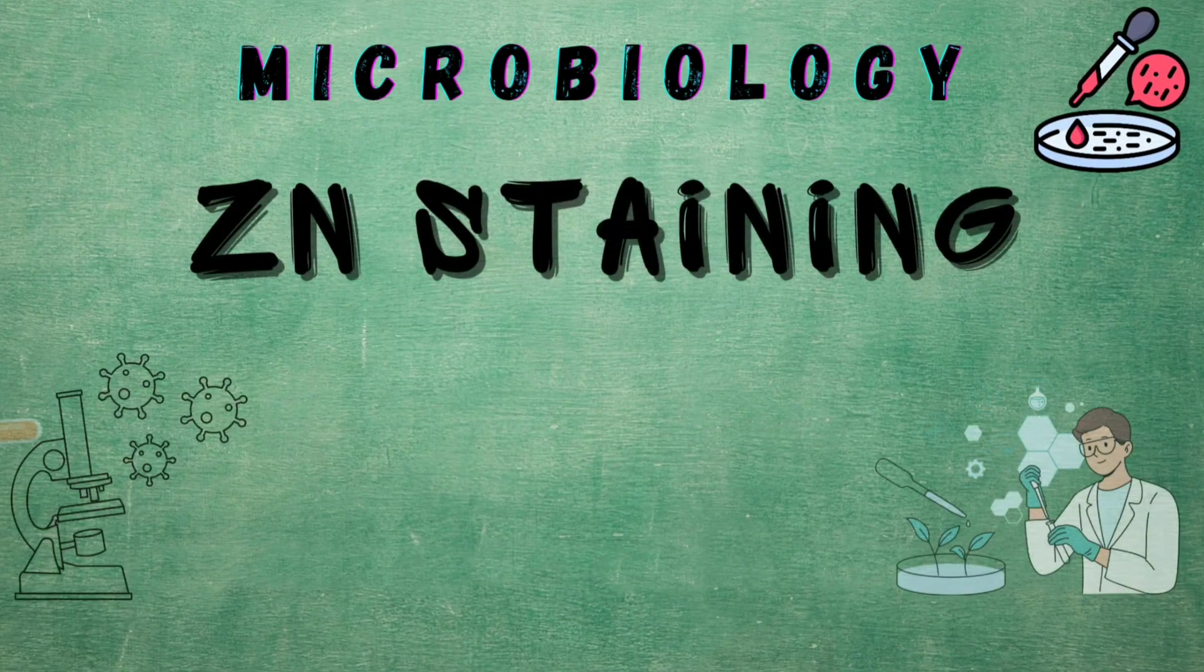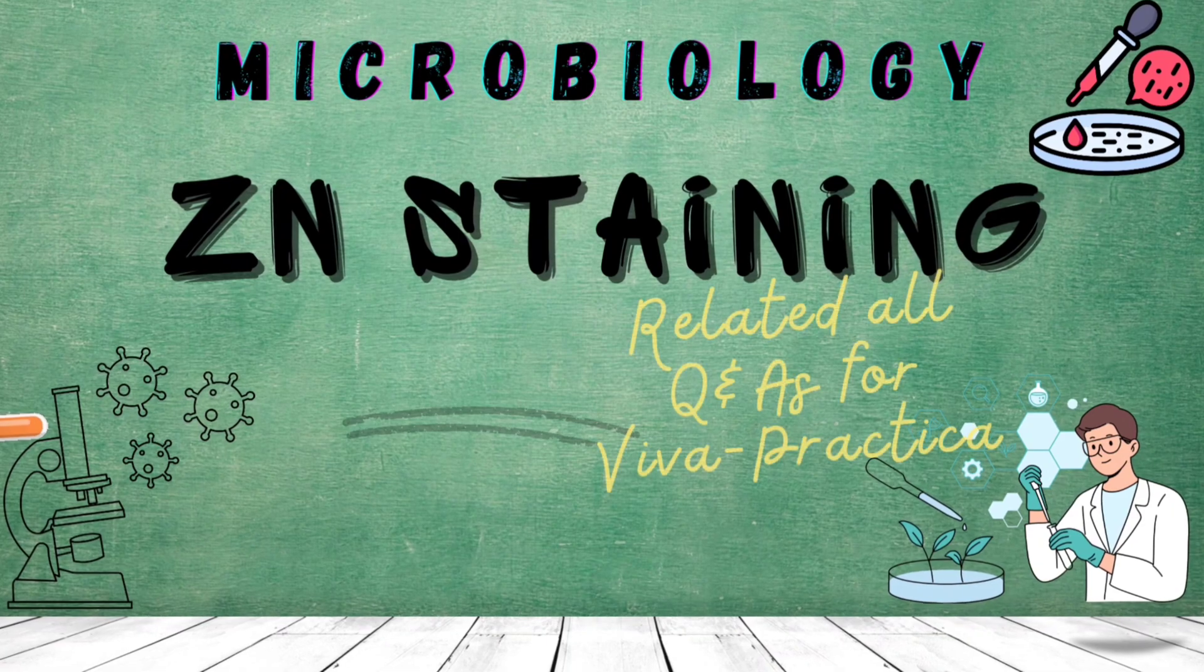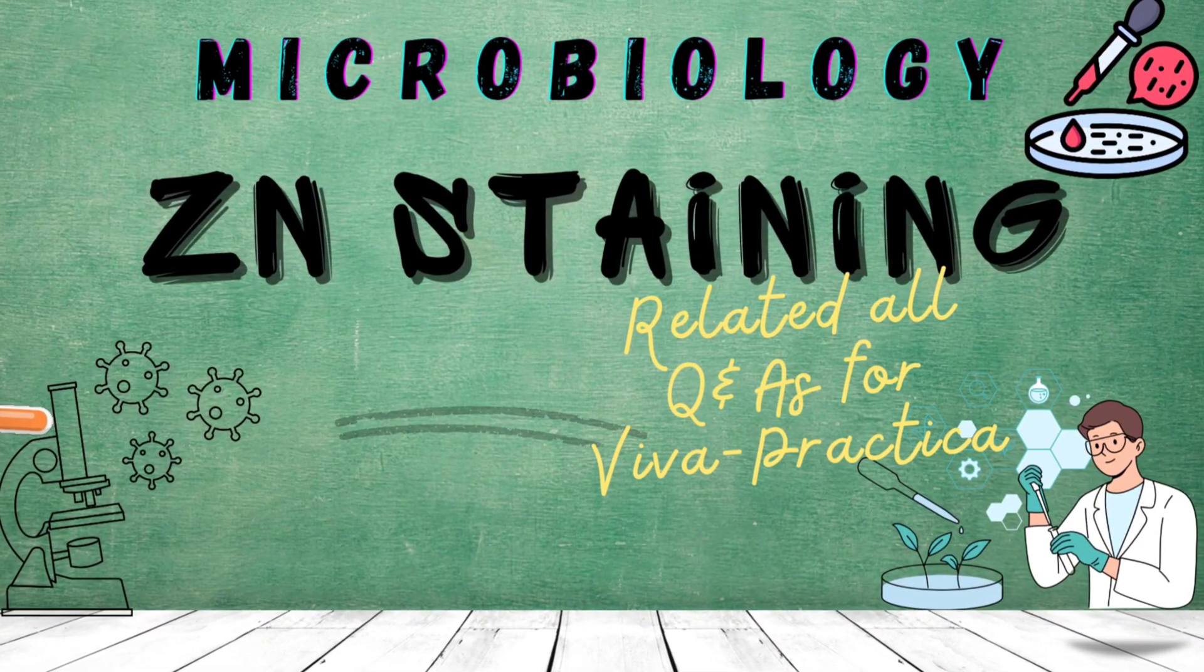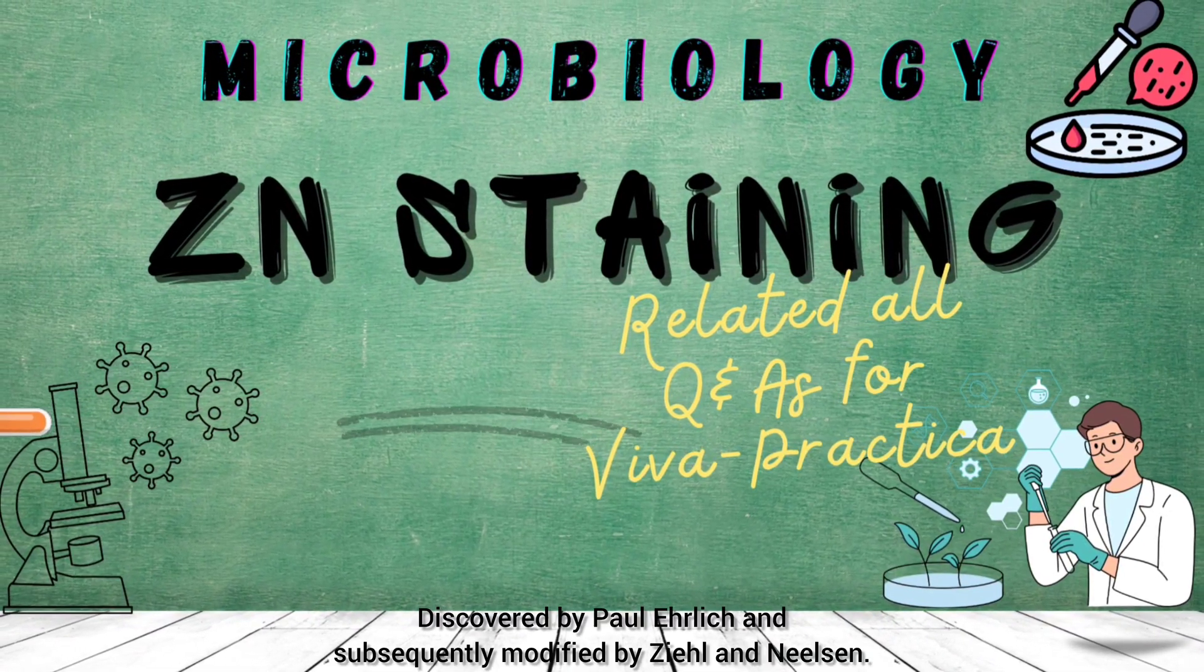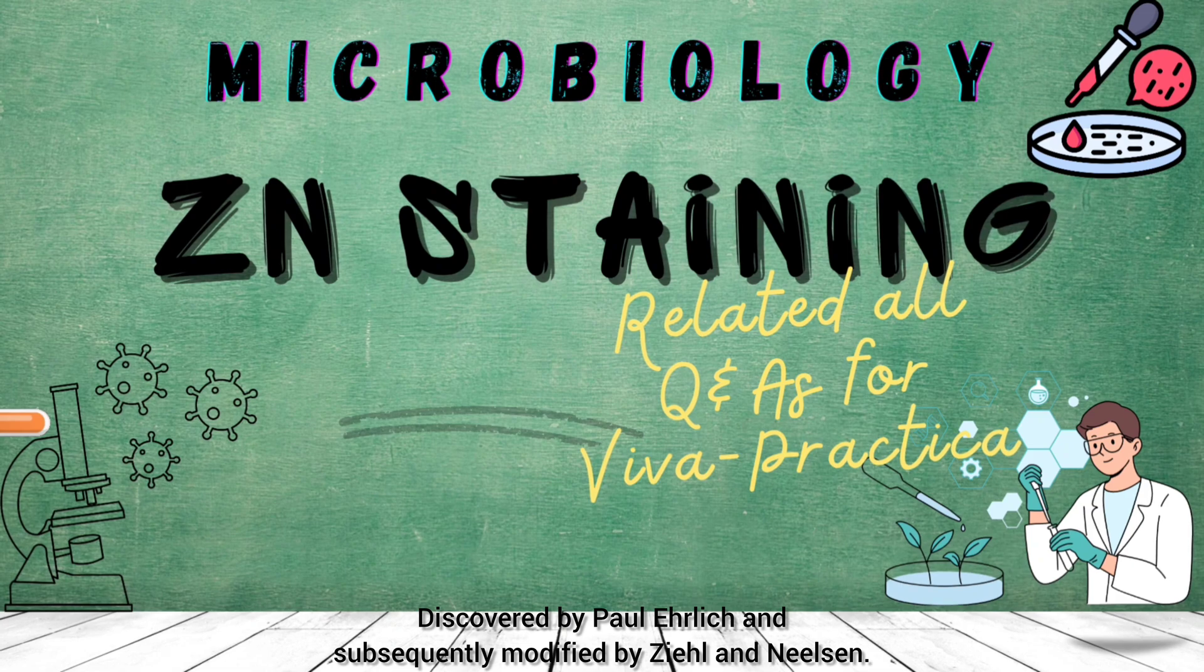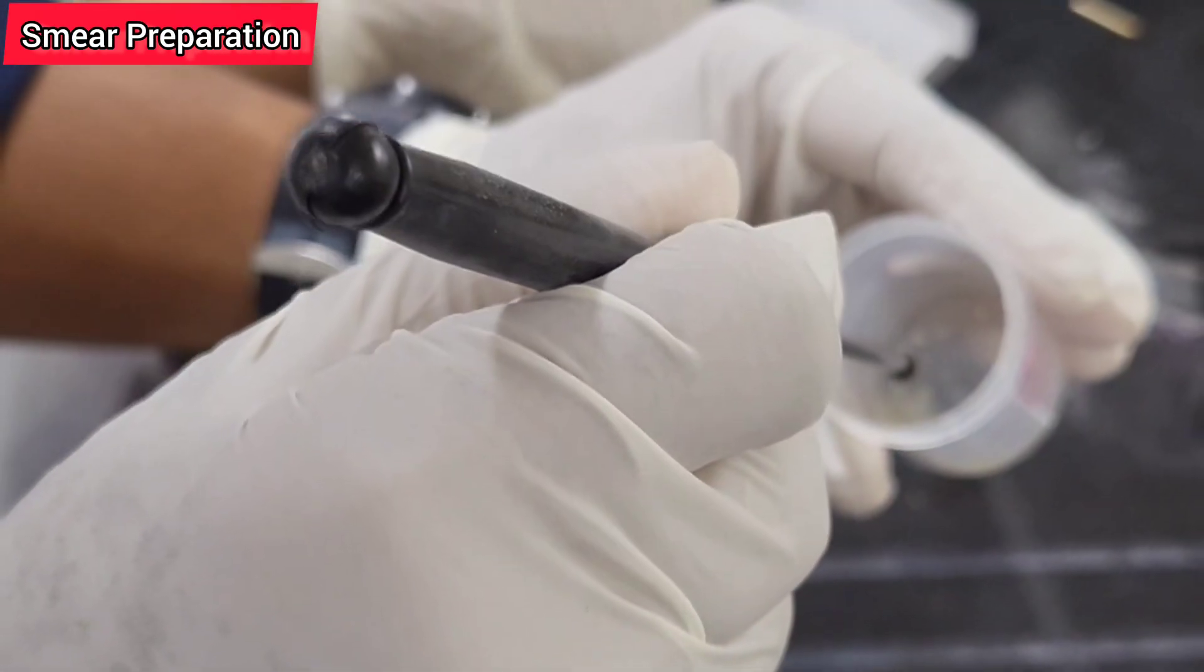Ziehl-Neelsen staining or Ziehl staining or acid-fast staining is a differential stain used to identify acid-fast bacilli. Discovered by Paul Ehrlich and subsequently modified by Ziehl and Neelsen. First step is smear preparation: place a sputum sample, mainly purulent part of sputum, on a clean glass slide with the help of sterile inoculation loop.